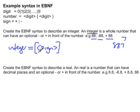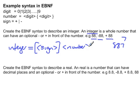That optional sign is then followed by a number. The number is also previously defined, so we use angle brackets again. So what we have now is: an integer is an optional sign followed by a number.